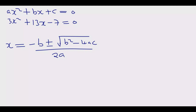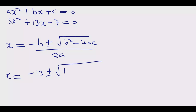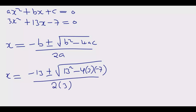The quadratic formula is x equals minus b plus or minus the square root of b squared minus 4ac, all over 2a. From the equation, a is 3, b is 13, and c is negative 7. So it's just a matter of substituting. X equals minus 13 plus or minus the square root of 13 squared minus 4 times 3 times negative 7, all divided by 2 times 3. The beauty of this formula is you can solve any equation without any difficulties.